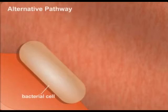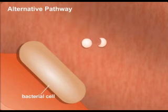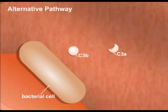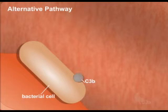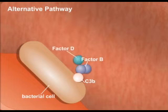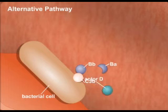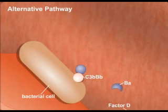The alternative pathway does not require the presence of antibodies. Activation begins with cleavage of C3 into C3A and C3B, either spontaneously or by a blood protein. C3B binds to foreign substances. Factor B, a blood protein, attaches to C3B and is cleaved into two fragments, BA and BB, by Factor D.